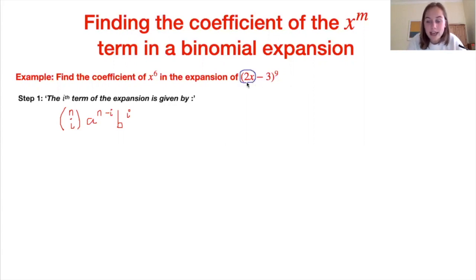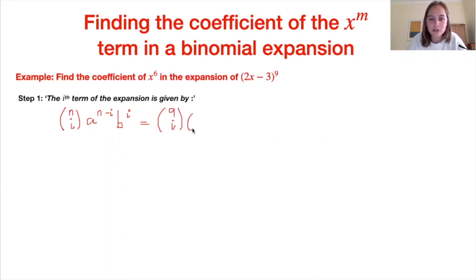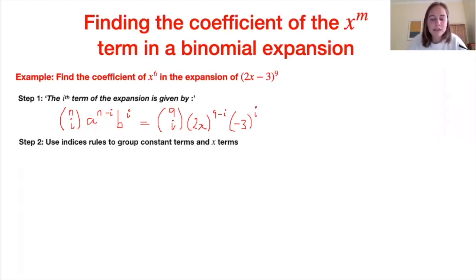So the ith term equals 9 choose i × (2x)^(9−i) × (−3)^i. Remember that b is negative, so we must include that negative sign. This gives us our expression for the ith term. The second step is to use our index rules to group constant terms and x terms.